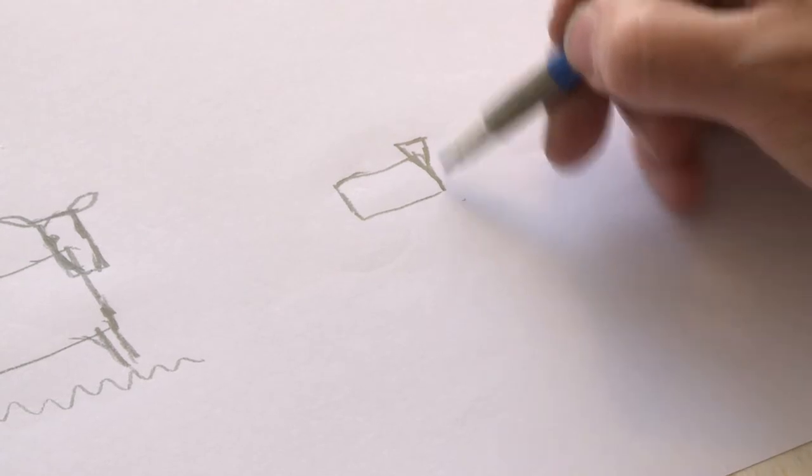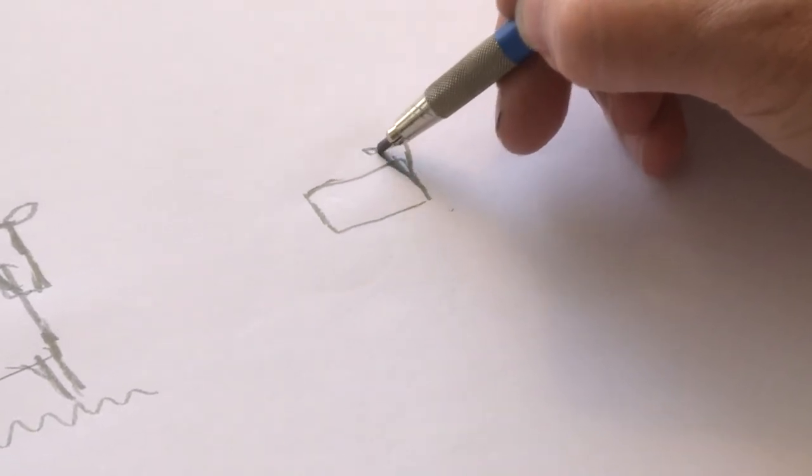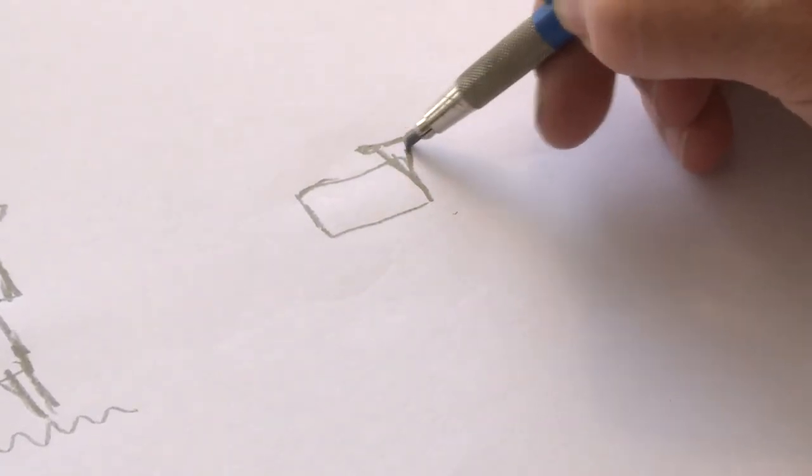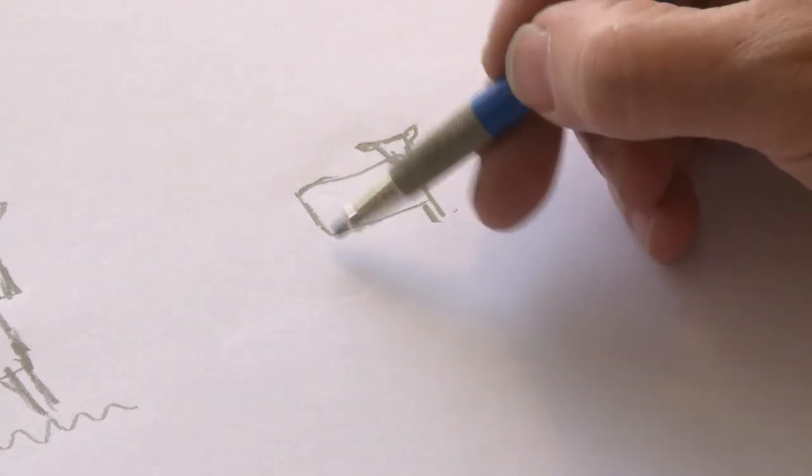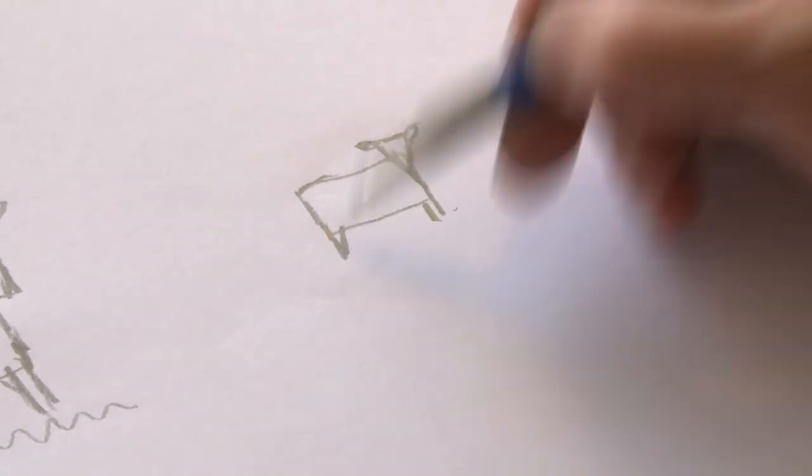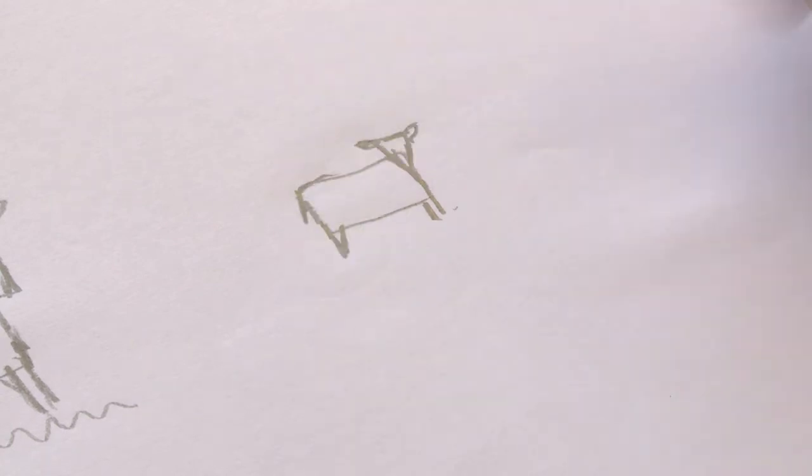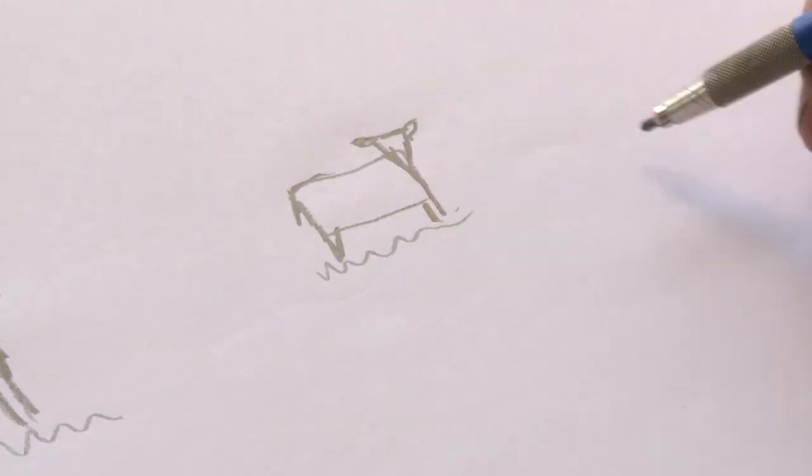And again little ears, not quite so big as the cows ears, a couple of little legs at the front, and a leg at the back, a little bit of a tail, sheep.